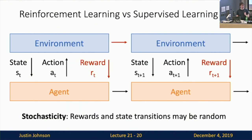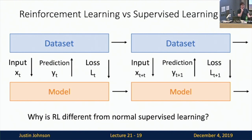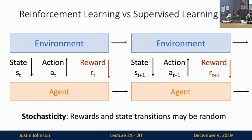The first big reason is stochasticity. In reinforcement learning, everything might be noisy: the states might be noisy or incomplete, the rewards might be noisy or incomplete, and the transitions from one time step to the next can be a non-deterministic function. In supervised learning, the loss function is typically deterministic — same input, same loss. But in reinforcement learning, even if we see the exact same state and take the exact same action, we might get different rewards in different time steps due to underlying randomness.